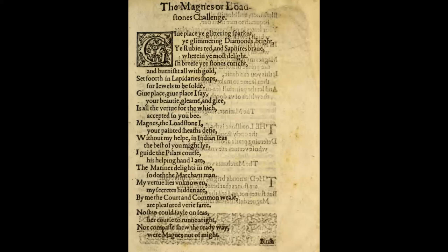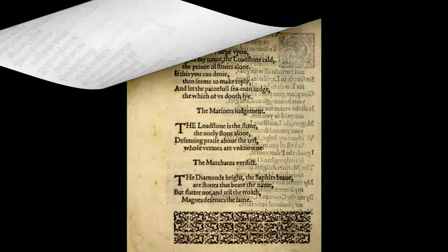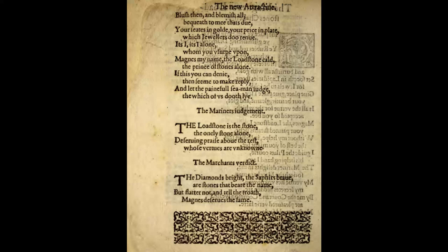"Without my help in Indian seas, the best of you might lie. I guide the pilot's course, his helping hand I am, the mariner delights in me, so doth the merchant man. My virtue lies unknown, my secrets hidden are, by me the court and commonwealth are pleasured very far. No ship could sail on seas, her course shall run aright, no compass show the ready way, where Magnus not of might. Blush then and blemish all, bequeath to me that's due, your seats in gold, your price in plate, which jewelers do renew. It is I alone whom you usurp upon. Magnus my name, the Lodestone called, the Prince of Stones alone. If this you can deny, then seem to make reply, and let the painful seamen judge for which of us doth lie."